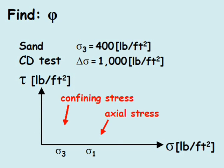In problems like this one, the confining stress, sigma-3, and the axial stress, sigma-1, are plotted on a horizontal axis and connected by a semicircle.